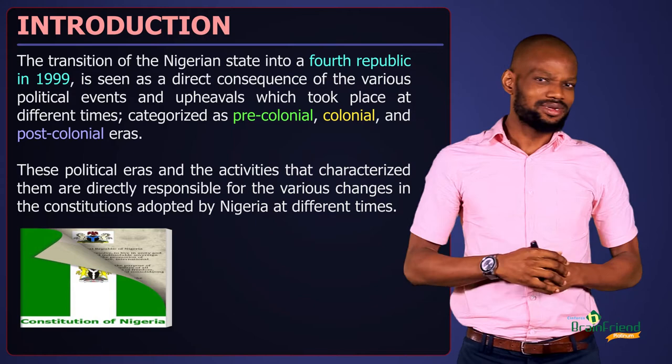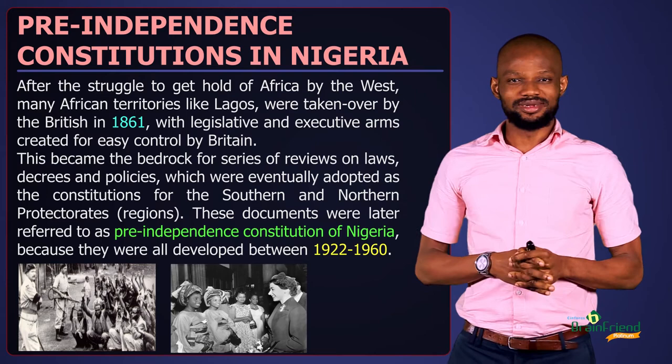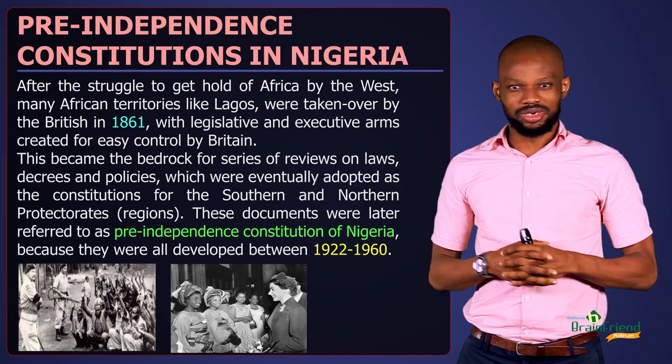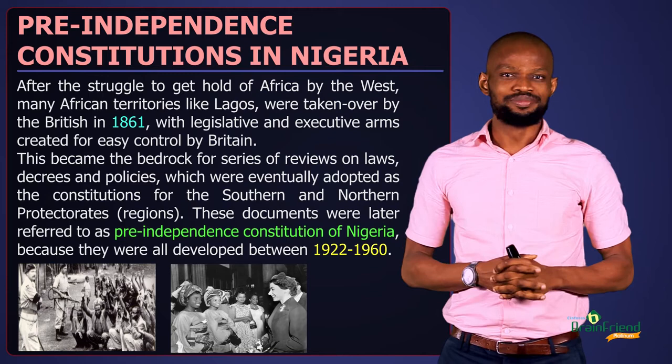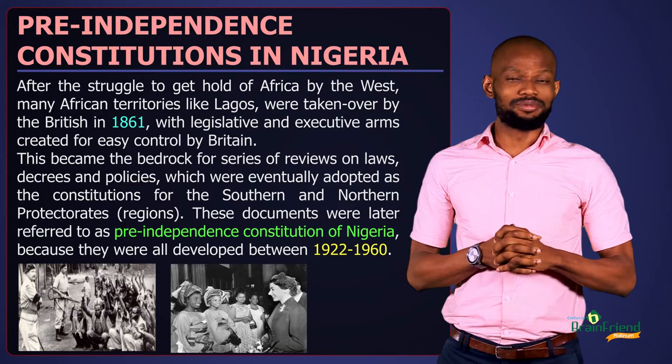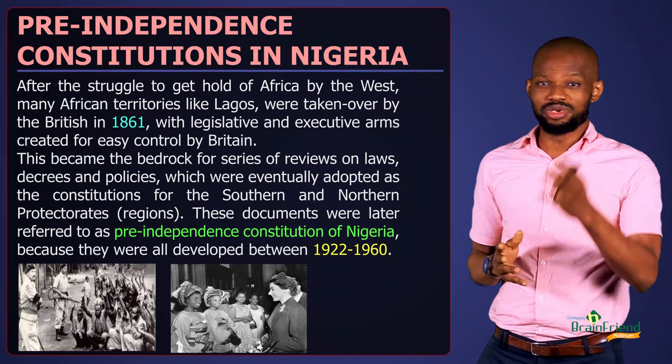Nigeria, like several other West African and African nations, was colonized by Britain. Britain gained full access into the Nigerian territory in the 1800s when they fought battles and captured many parts of the country, with the last victory being the northern parts. After a successful capture of the various territories, Britain established a colony in Lagos from where they administered the affairs of other regions.